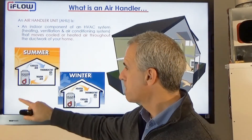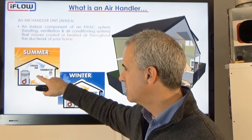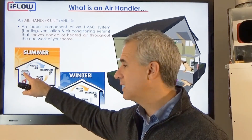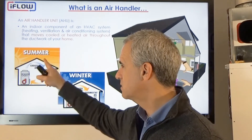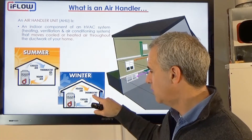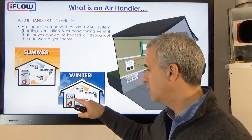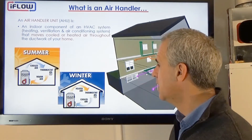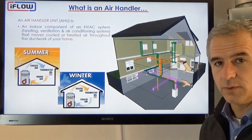In summer, we take the air that's in your home — it warms up with the heat of the sun — we bring it through, pass it across the evaporator coil, and send that conditioned, cooled air into the home. In winter, we do the opposite: we bring the cold air into the unit, run it across our heating coil, our hydronic coil — it heats up — and then we deliver the warm air into your home.